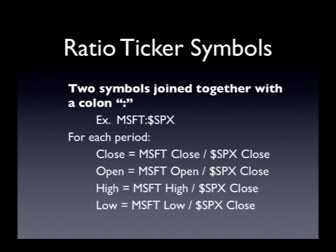Essentially what you do is you take one ticker symbol, you then type a colon, and then you type the other ticker symbol. You can put that in the main ticker box above the chart, or you can put it in any of those price indicators or price performance indicators. Although, frankly, the price performance of a ratio symbol kind of hurts my head.